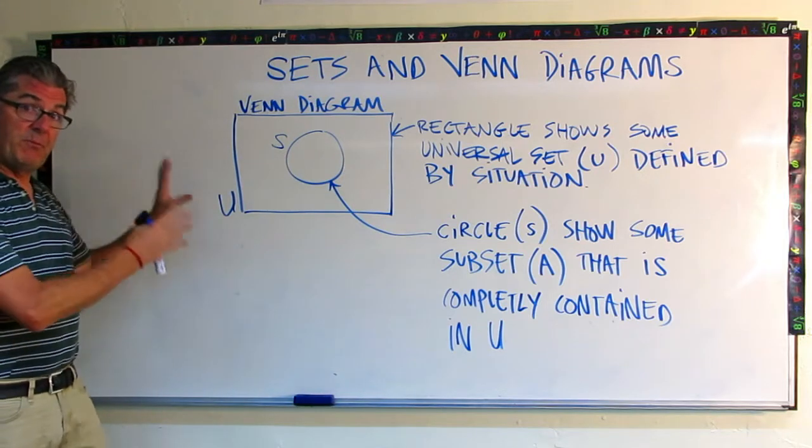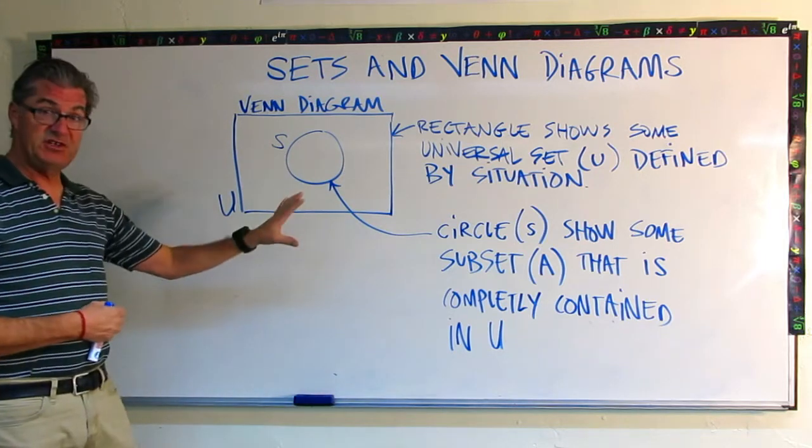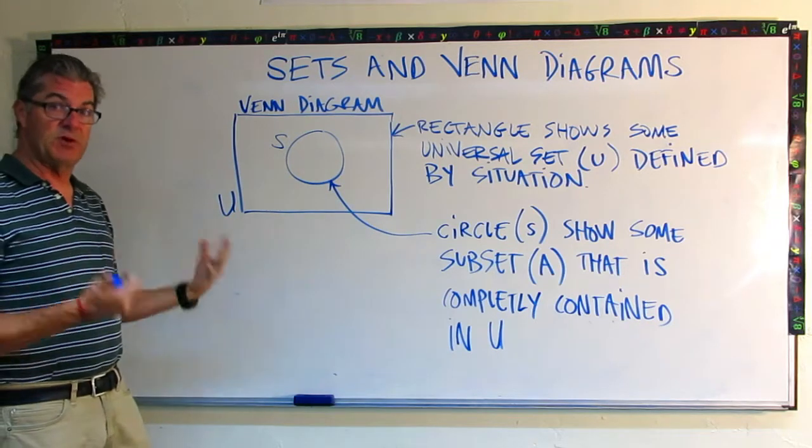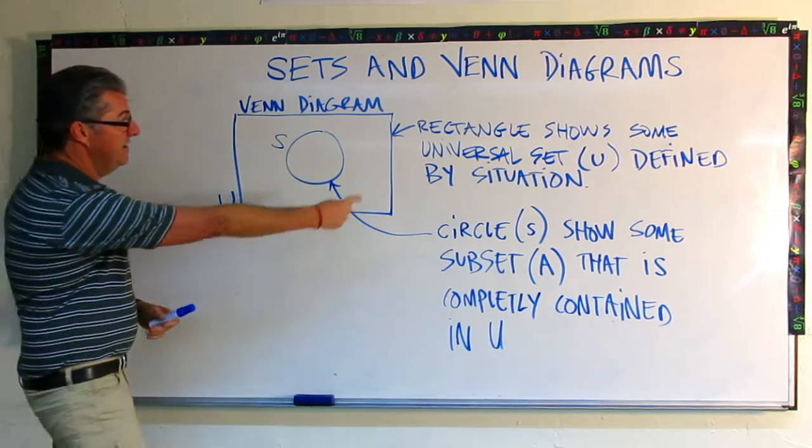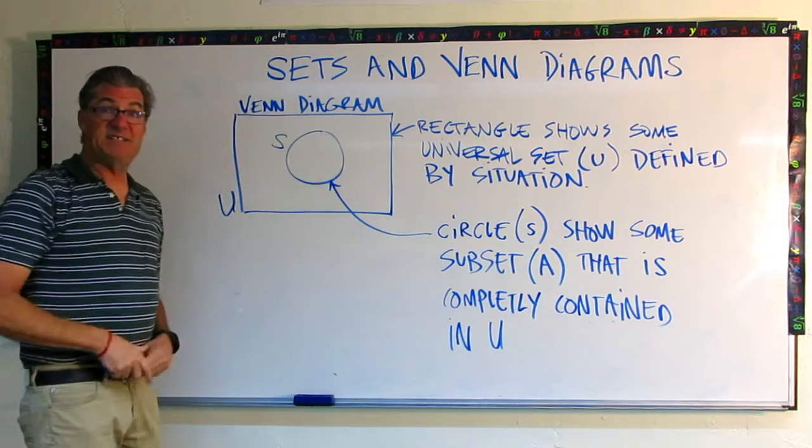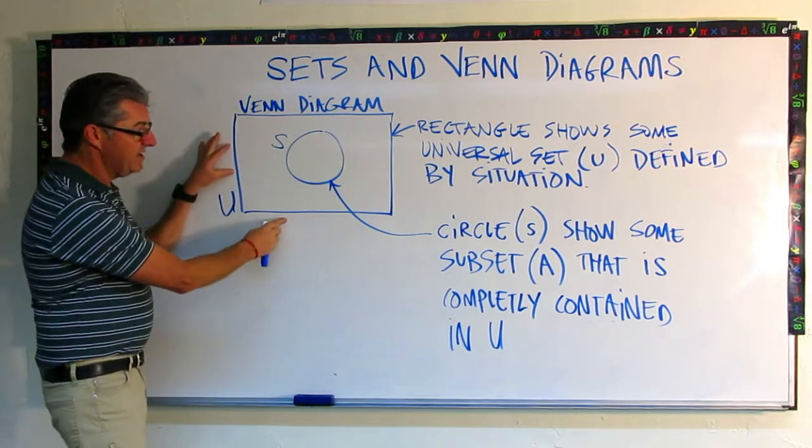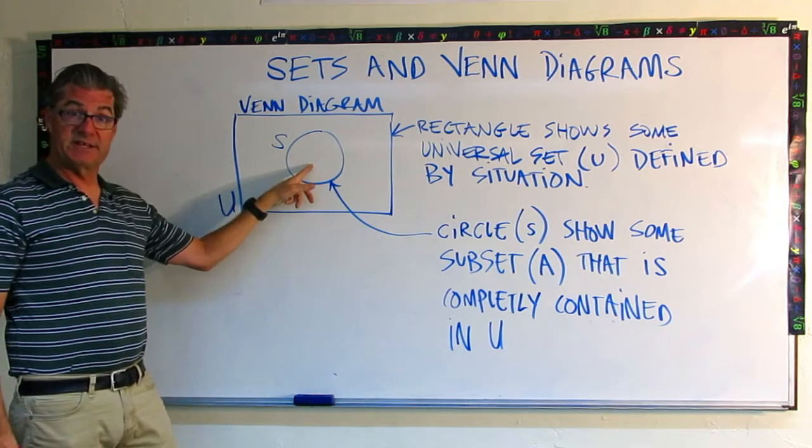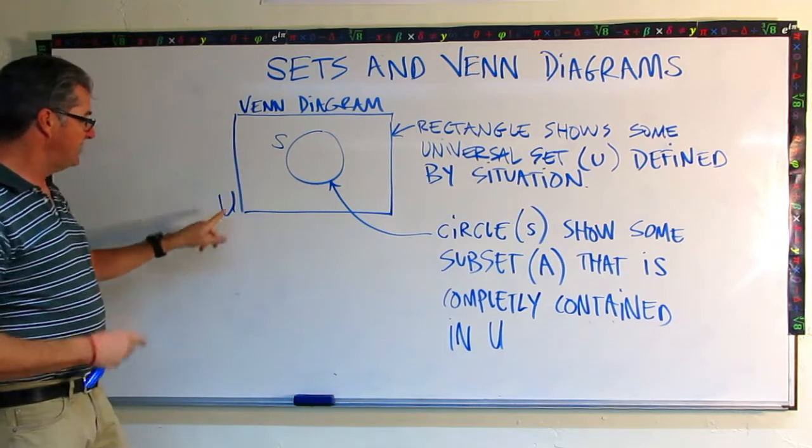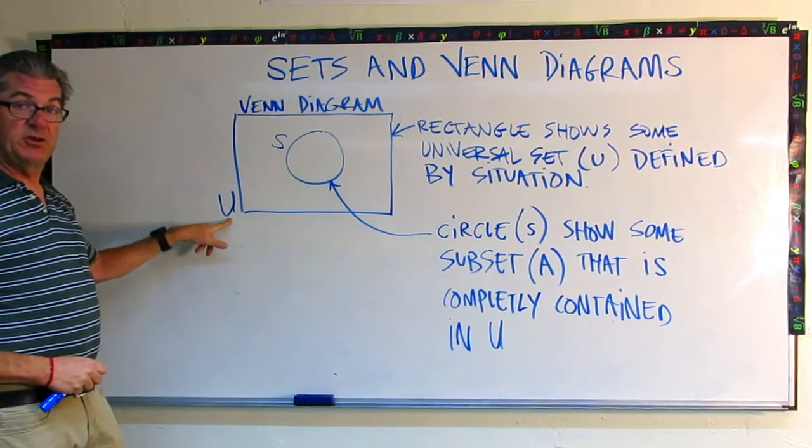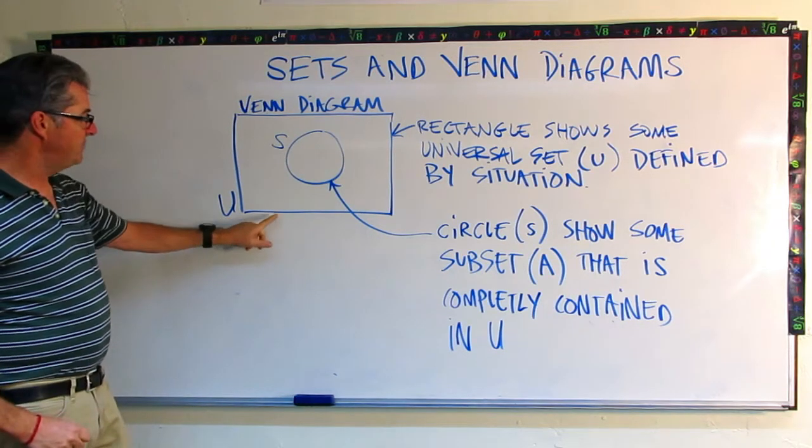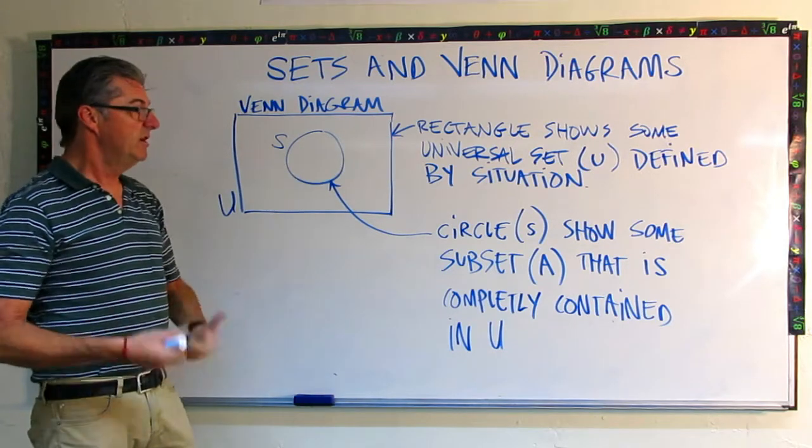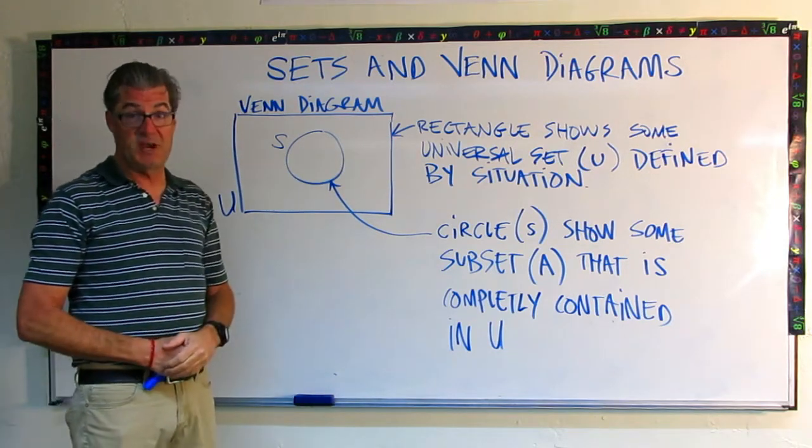So I've drawn a real basic Venn diagram with definitions here. We'll go through that and then start working through some examples where we actually put numbers in there. This area right here, that's the Venn diagram. It's got a rectangle on the outside and at least one circle inside. You'll notice that we have some letters here. U stands for the universal set and that's represented by the rectangle. So the rectangle shows some universal set U defined by the situation.